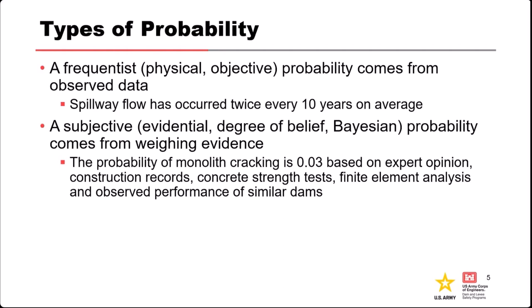The first type is usually called a frequentist probability, sometimes called a physical probability or an objective probability. If you've ever taken a course in probability and statistics, this is what traditionally gets taught — the frequentist version. The general premise is that frequentist probabilities come from observed frequencies: we observe things in the real world, in an experiment, or in a model.